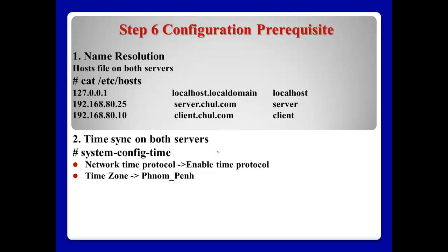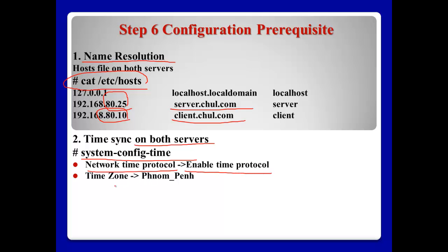Before you start configuration, there are two prerequisites for cover. First, name resolution — I will use the etc/hosts file. Here, 8025 is the server and 8010 will be the client. Second, time synchronization on both servers. For this purpose, we can use the command system config time — just click network time protocol and enable time protocol and time zone. Let me show you.